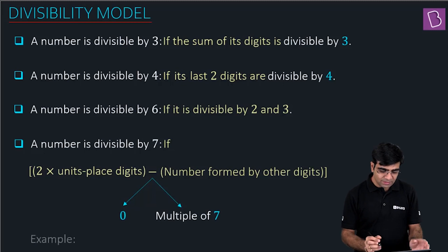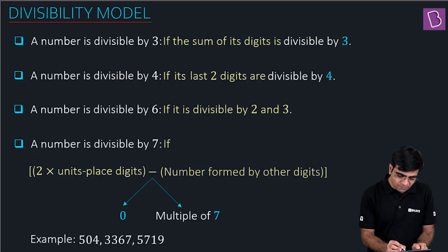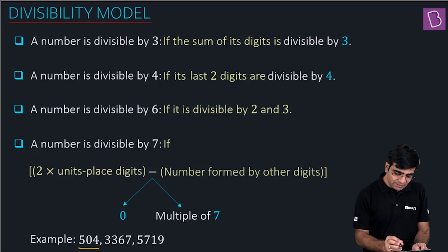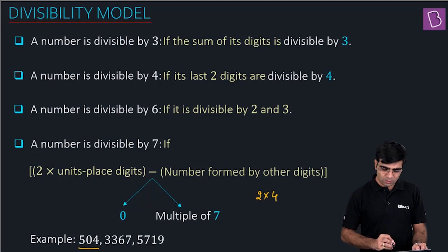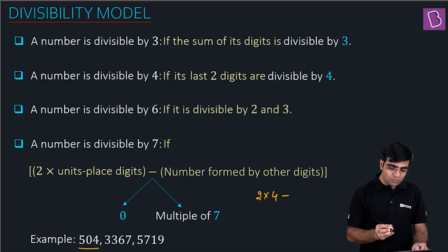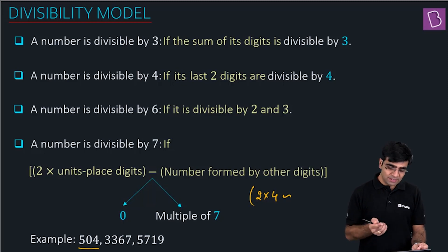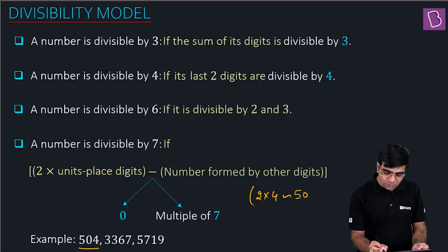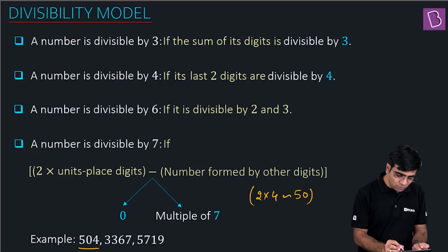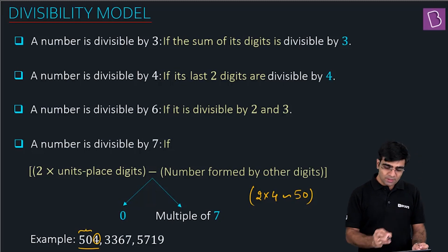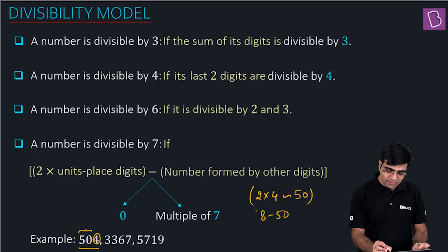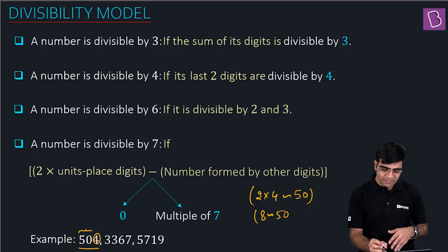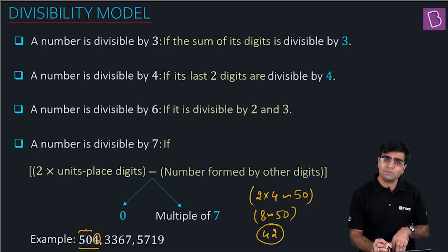Let me take a few examples. Without an example it might be a bit difficult to absorb this. Let's take 504. You take two times the unit digit, which is 4, so we get 2 × 4 = 8. Then we take the difference with the other digits, which is 50. So we get the difference of 8 and 50, which is 42. Is 42 divisible by 7? Yes. Hence the number 504 is clearly divisible by 7.